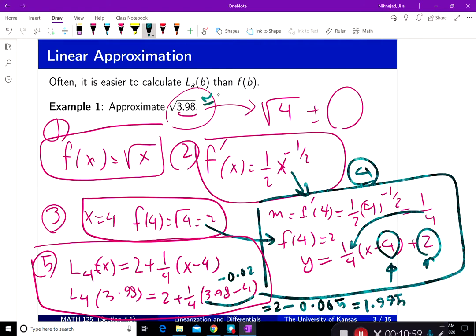So we approximate this with 1.995. So it's much better approximation than you did in grade school, which was 2. You have a better approximation in here.